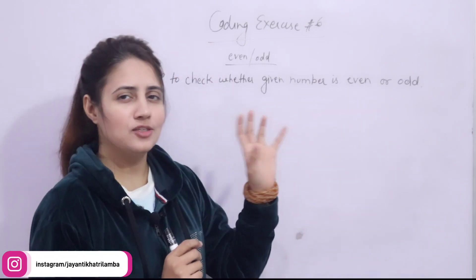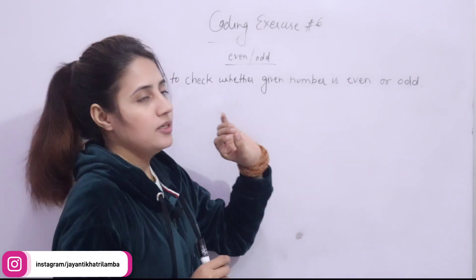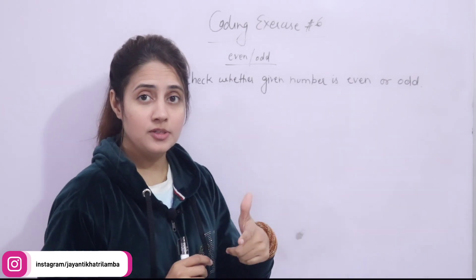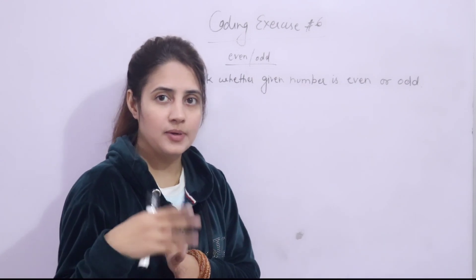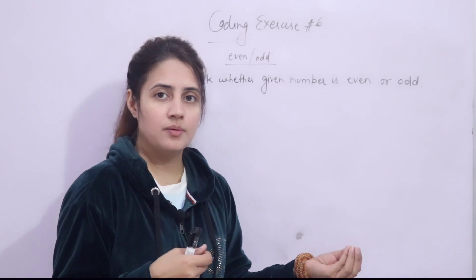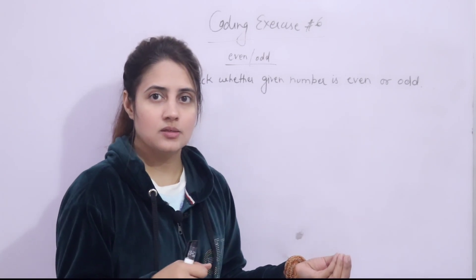You have to find out, this is very simple, whether the given number is even or odd. Even number means that is divided by 2 with no remainder, completely divisible by 2, like 2 is even number, 34 is even number, like this.